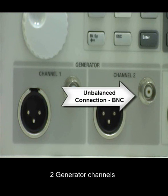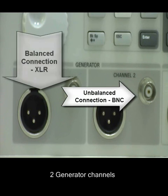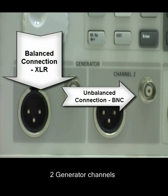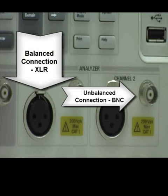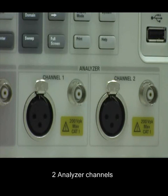Both channels in the generator and analyzer come with balanced and unbalanced connections. For unbalanced connections, we have the BNC connectors, whereas for the balanced connections, we have the XLR connectors.